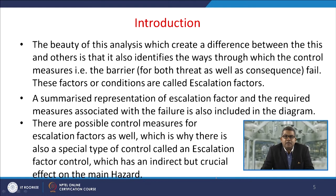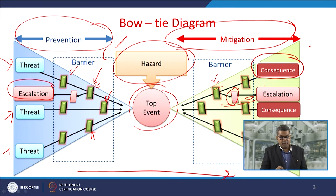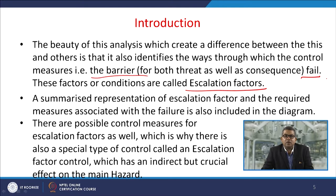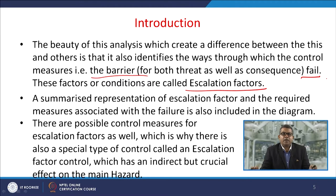The beauty of this analysis, which creates a difference between it and others, is that it also identifies the ways through which the control measures — the barriers — for both threats and consequences can fail. These factors or conditions are called escalation factors. A summarised representation of escalation factors and the required measures associated with their failure is also included in the diagram, along with a special type of control called an escalation factor control, which has an indirect but crucial effect on the main hazard.